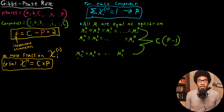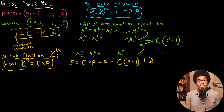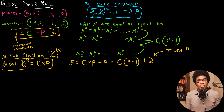So if we want to solve for the total number of independent variables F, it's going to be C times P — all the ways we can classify our properties via the mole fraction — minus P (the mole fraction restriction), minus C(P minus 1) (the chemical potential equilibrium restriction), plus two. This plus two accounts for temperature and pressure, which are intensive variables always included to describe the independent properties of the system.